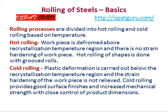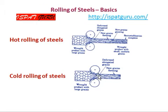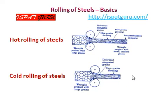Cold rolling provides good surface finish, increased mechanical properties, and good control of product dimensions. The figure shows the grain structure as it takes place in hot rolling — large elongated grains become smaller equiaxed grains by the recrystallization process. In the case of cold rolling, the elongated grains do not get equiaxed and the steel remains in a hardened condition.